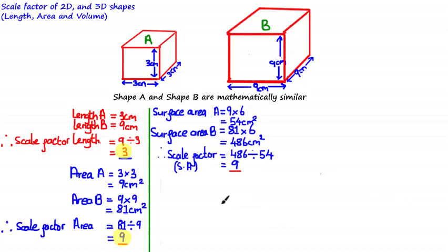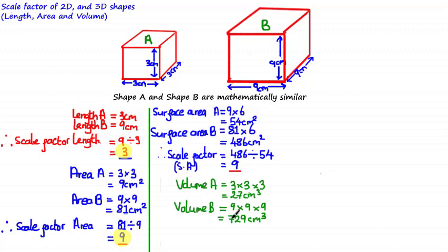Another measurement that describes the size of enlargement for similar shapes is volume, so we can also find the scale factor of volume. Since the volume of a cube equals length times width times height, the volume of cube A is 3×3×3, which equals 27cm³. The volume of cube B is 9×9×9, which equals 729cm³. To find the scale factor of volume, we divide the larger volume by the smaller: 729 divided by 27 equals 27.